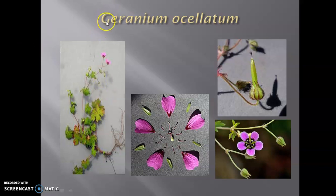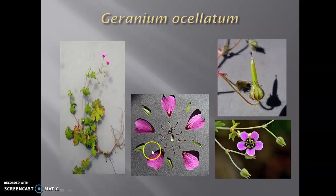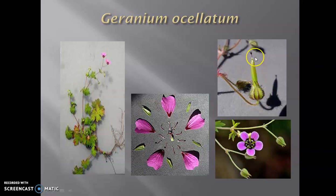We are going to take the example that is Geranium oscillatum. This is the habit of this plant, this is the flower. When we dissect it, it shows the presence of 5 calyx, 5 corolla, then 10 androecium in two groups and a pentacarpillary ovary. This is the fruit of the Geranium oscillatum.